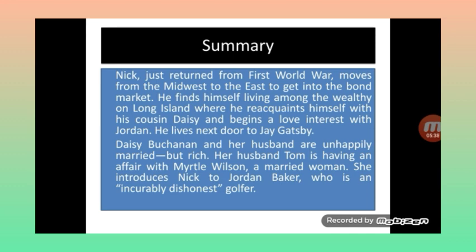Nick, just returned from the First World War, moves from the Midwest to the East to get into the bond market. He finds himself living among the wealthy on Long Island, where he acquaints himself with his cousin Daisy, and begins a love interest with Jordan Baker. He lives next door to Jay Gatsby. Daisy Buchanan and her husband are unhappily married — they are rich and have enough money and property, but there is not a good relationship between them. Her husband Tom is having an affair with Myrtle Wilson, a married woman.